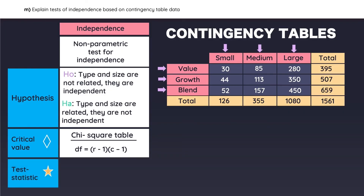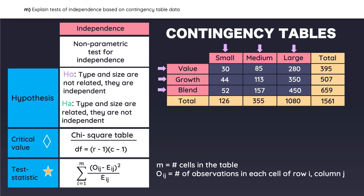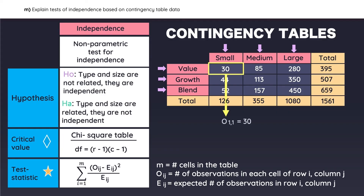You also need a test statistic, which is found with this formula. M is the number of cells in the table — in this case, nine. O is the number of observations in each cell, and E is the expected number of observations in each cell. For example, O is equal to 30, and the expected value is calculated as the column total times the row total divided by the overall total. This type of test will always be a right-tailed test, so the last step is to compare the critical value and test statistic to see if you need to reject the null hypothesis.